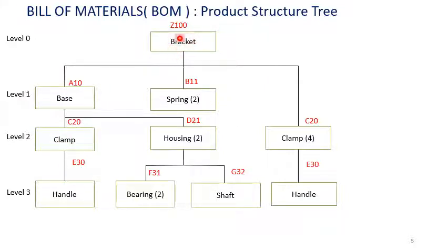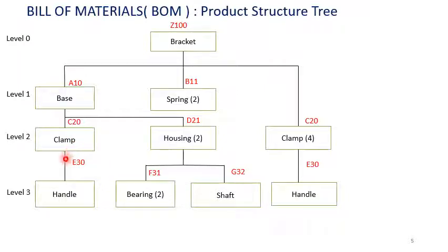This base is further divided into subcomponents, so the base itself becomes a parent to its subcomponents. Every one unit of base requires one unit of clamp and two units of housing. Similarly, one clamp requires one handle. Note that C20 appears twice but refers to the same clamp — as confirmed by the same label C20. Similarly, the handle E30 appears in two places but is the same component.